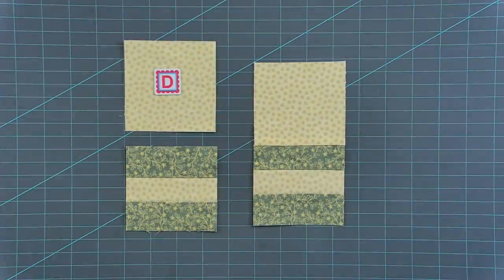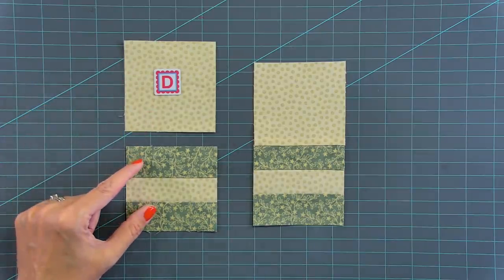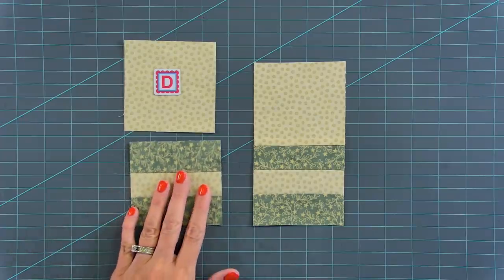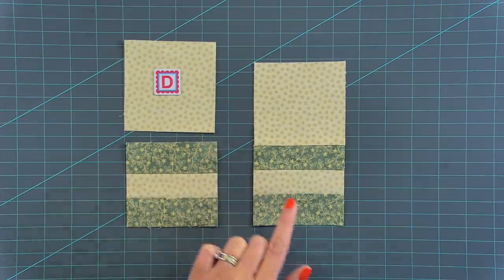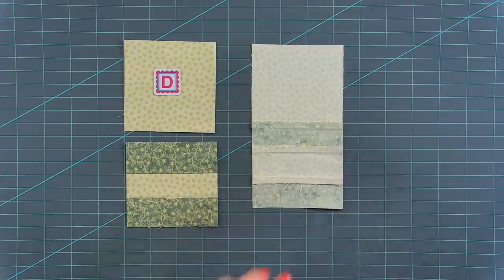The very last unit we're going to make before we build our block is our center unit. And that one's super easy. You just take a fabric D square and one of your rail units. And just make sure you have it turned the correct direction. Stitch with a quarter inch seam and make four. And again, press according to the pattern.